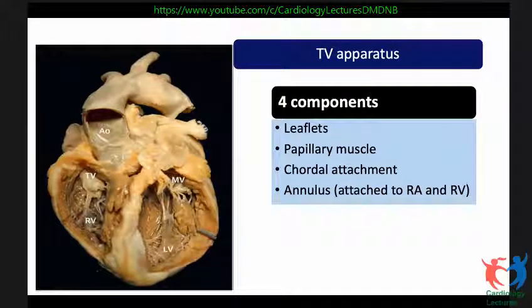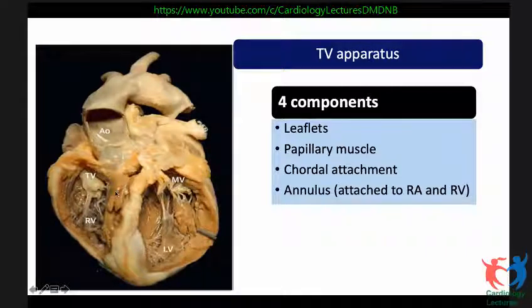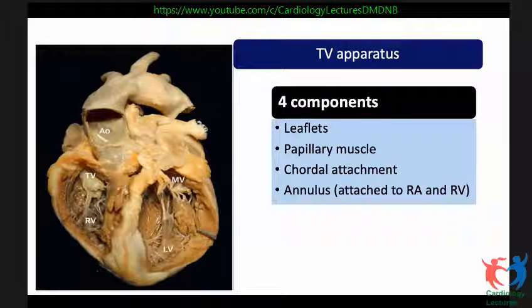The tricuspid valve apparatus has four components, just like the mitral valve: the leaflets, the papillary muscles, the chordal attachments, and the annulus which attaches both the right atrium and the right ventricle.